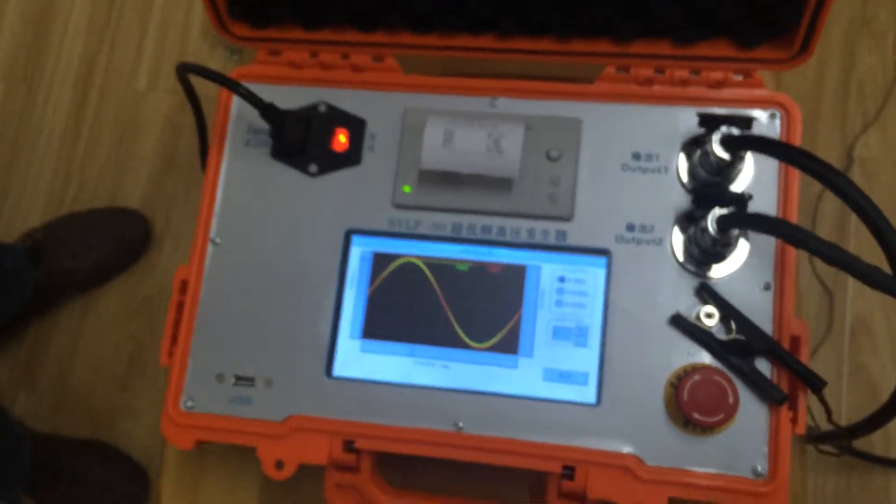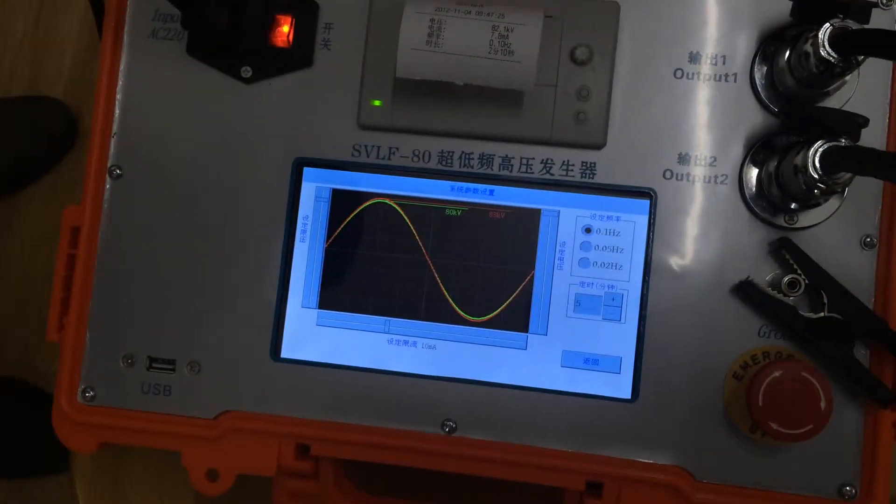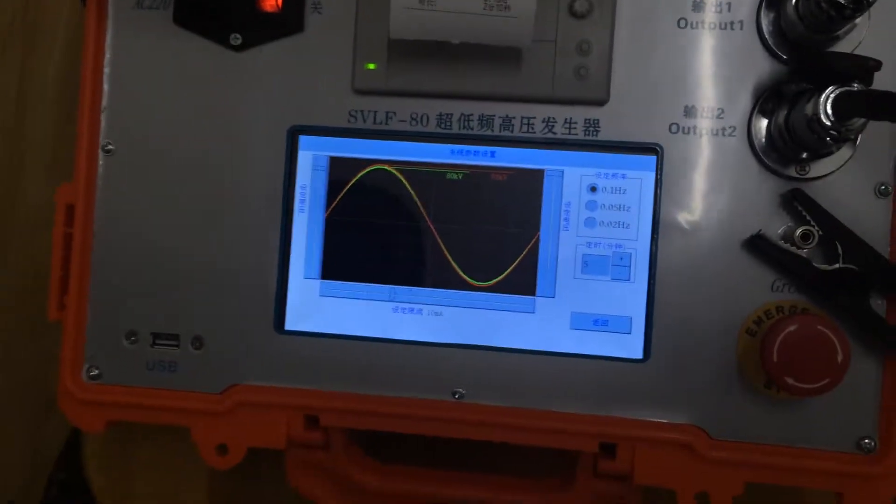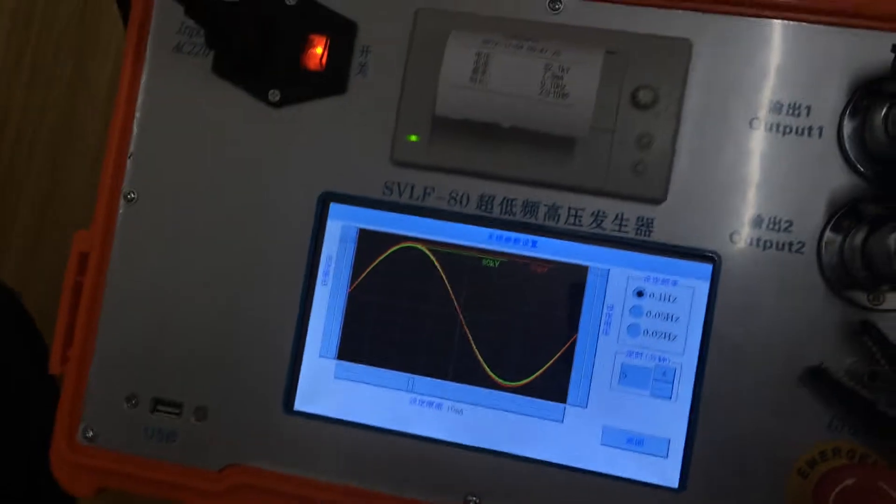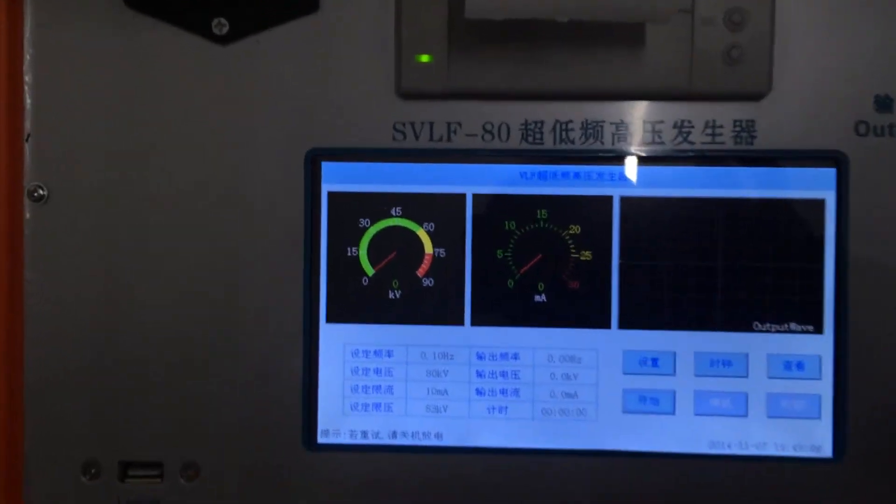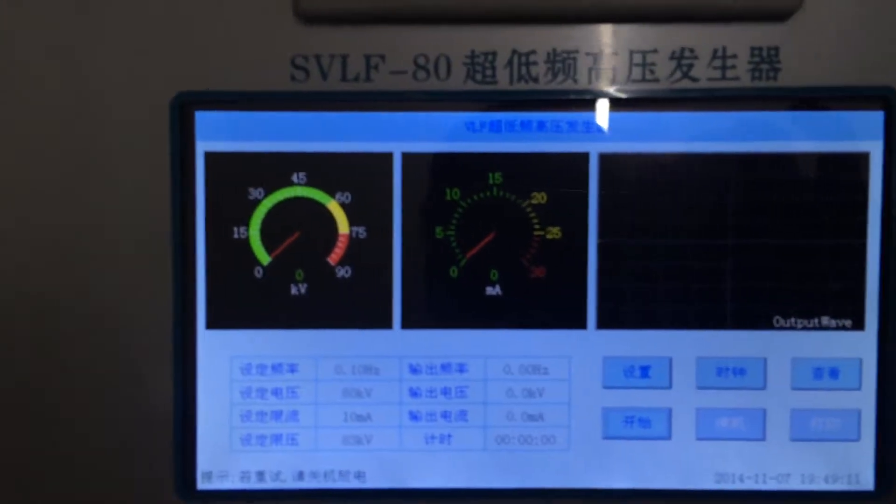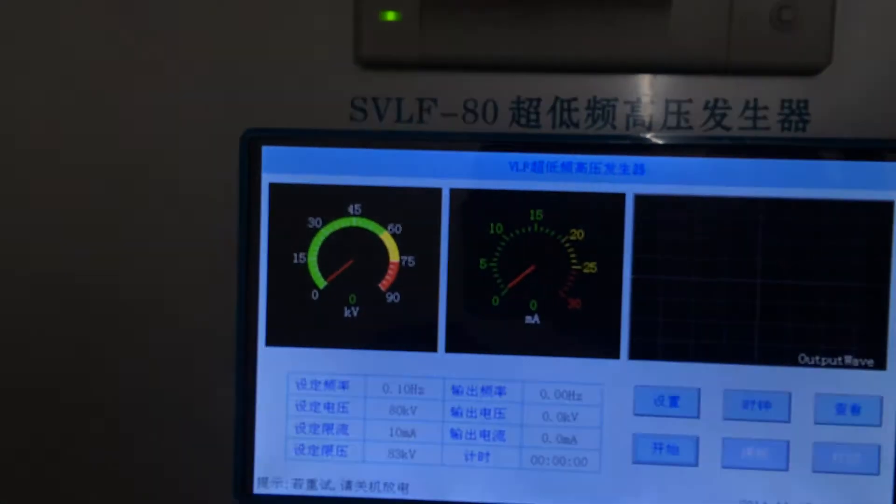You will see the first interface. You can set parameters - you can set the frequency, parameters, time, and the voltage current. After the parameter set, you can press start.